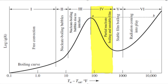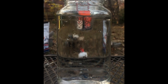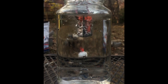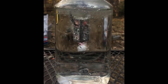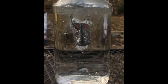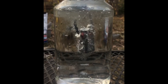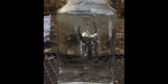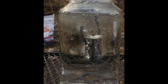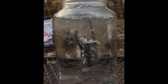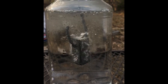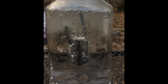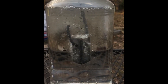Regimen 4 is characterized as partial nucleate boiling and unstable film. It appears between delta T values of 400 to 100 degrees Fahrenheit. For both metal surfaces we see partial film layers collapse and form large bubbles. The rectangle once again experienced these formations on the faces of the prism.